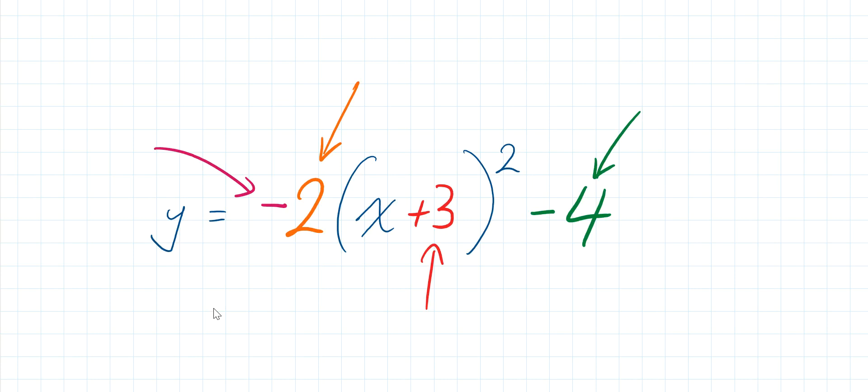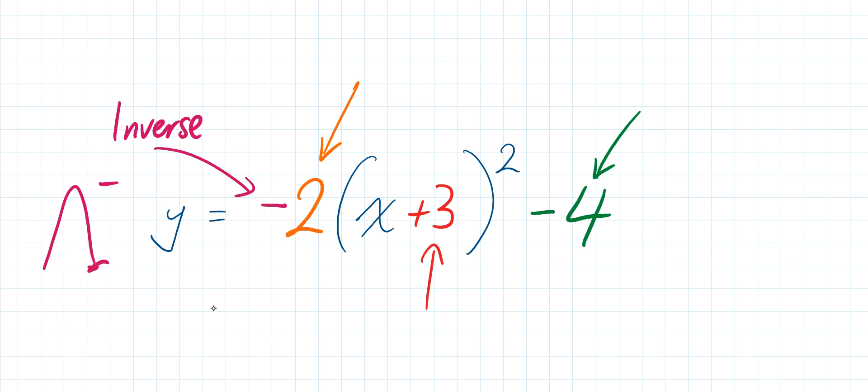First we're going to look at the negative sign. The role of this negative sign is it makes our parabola inverse — so our parabola is going to be upside down. It's going to be a sad face as opposed to a smiley face. So this negative sign flips it upside down. Negative means you end up with a sad face, and if you've got a positive or no symbol there, you've got a parabola the right way up — a smiley face. So that's our inverse transformation.